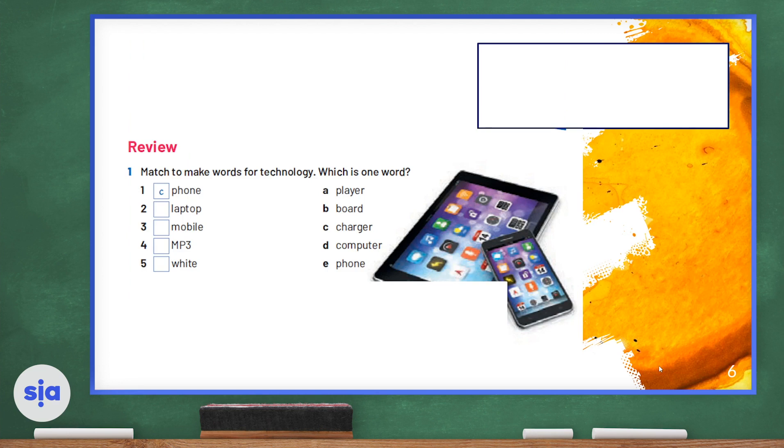Now we're going to match to make words for technology, which is one word. Number one is C, so 1-C: phone charger. Number two is laptop computer. The next word, number C, is E, so it is mobile phone. And number four is MP3 player. And number five is whiteboard. Remember, whiteboard is one word and not two words, so they have to be stuck together when we write them down, unlike phone charger or laptop, which must be two words, written as two separate words.